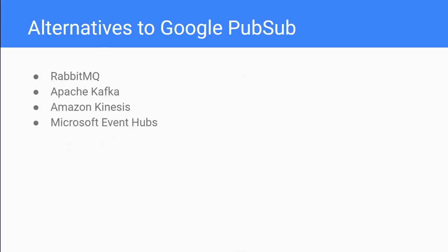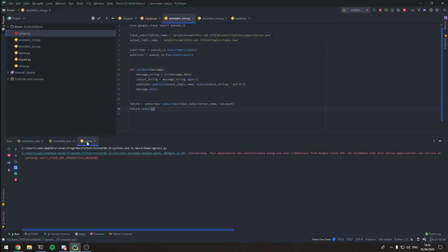There are also fair few alternatives to Google PubSub. If you want to do it yourself without paying Google, you could use RabbitMQ - a free, open-source piece of software you can run locally that offers lots of models beyond just publish-subscribe. There are also cloud-based alternatives: Amazon Kinesis and Microsoft Event Hubs are basically Amazon and Microsoft's equivalents, and Apache Kafka is another free open-source alternative.